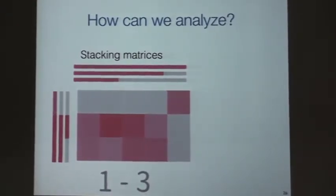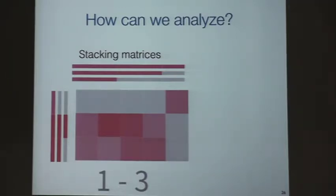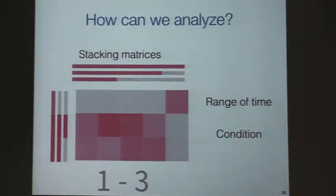The visualization is good — we have matrices. But how can we analyze software evolution? We have a domain-specific language that allows us to do two operations. The principal operation is stacking matrices. How can I stack a matrix? We can stack a matrix with a range of time — we say from one to three, this matrix is stacked. Or we can stack a matrix with a condition, meaning each matrix must satisfy this condition to be stacked.